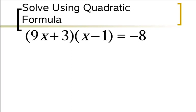Now we're going to look at a problem where we have to solve using the quadratic formula, but we've got to do some work first. Quadratic formula can only be used when you have ax squared plus bx plus c. We don't have an x squared yet, so in order to get there we have to FOIL.